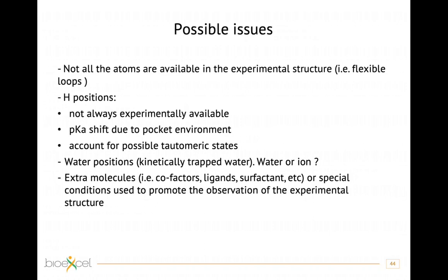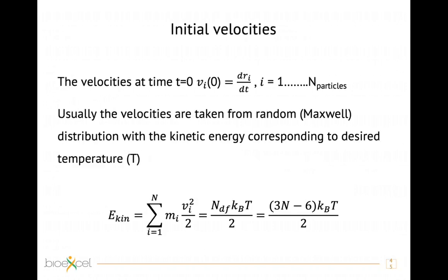We now have initial coordinates, and we may also want to have initial velocities. If all velocities at time zero are zero, your system starts at a temperature of zero, since temperature is related to kinetic energy. One way to generate initial velocities is to distribute them randomly over all atoms such that the system starts at the correct temperature. If you have a previous run, you can also take the velocities from there.